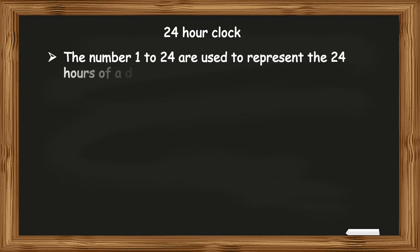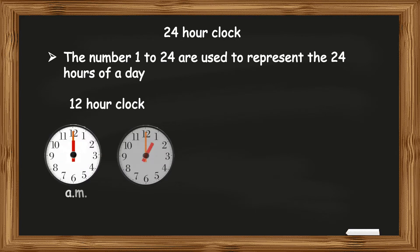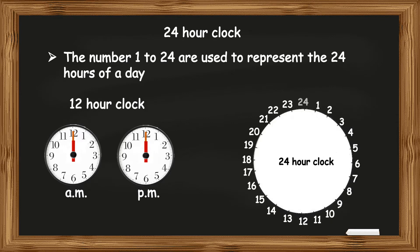Because in a 24-hour clock, the numbers 1 to 24 are used to represent the 24 hours of a day. This means that unlike a 12-hour clock, where the same time occurs twice in a day, once as am and then as pm, in a 24-hour clock, a particular time occurs only once in a day, which means that the hours from 1 to 12 represent am and the hours from 13 to 24 represent pm.